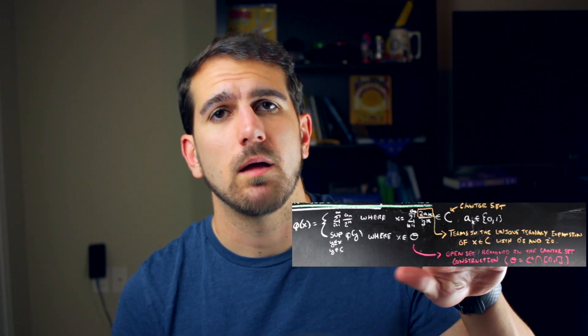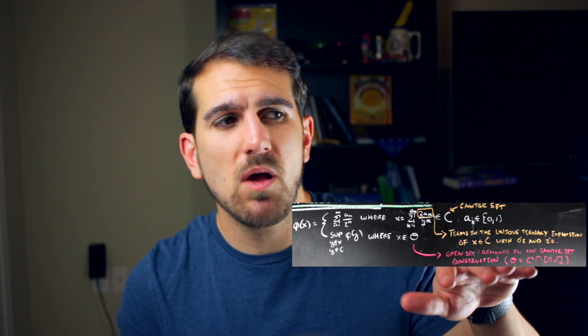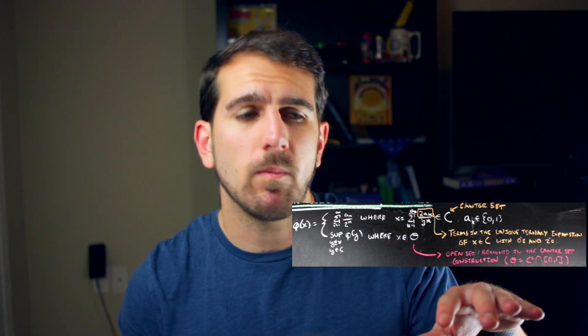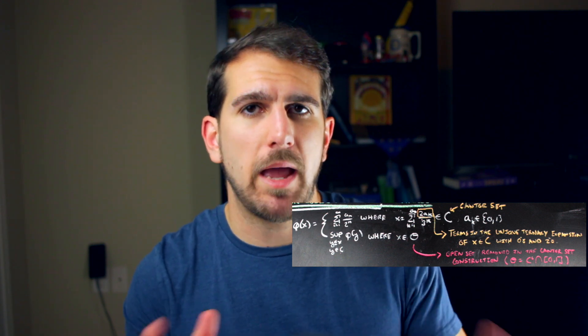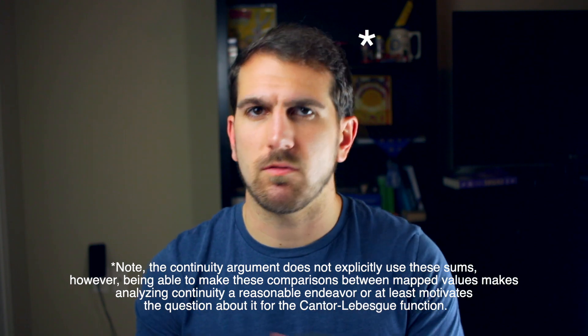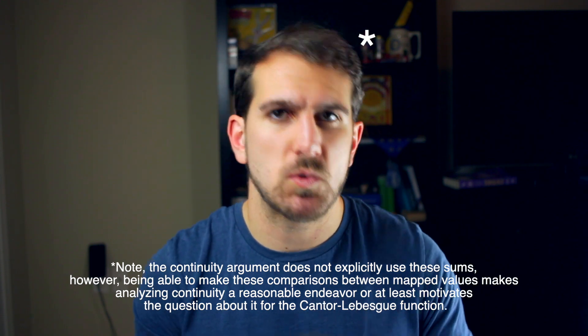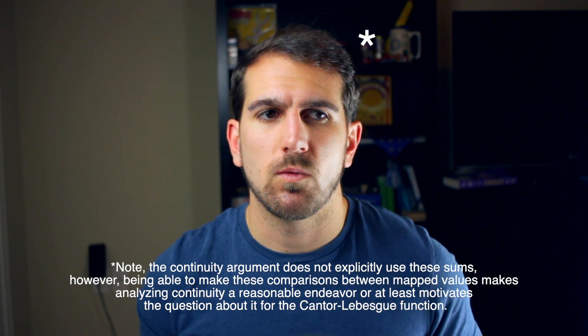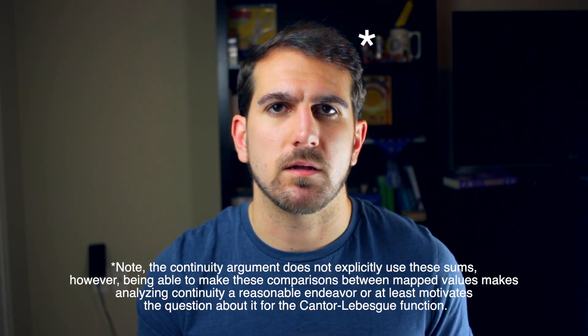So although it is a little bit clunky defining the Cantor-Lebesgue function in this way, as long as you know the ternary of what you're throwing into it, you can get to the sum. And once you know the sum, you can start comparing values. And so we can actually start talking about its continuity. It's a little bit involved, but we can figure out that this thing is continuous. But first, let's start with what the graph of this thing looks like.